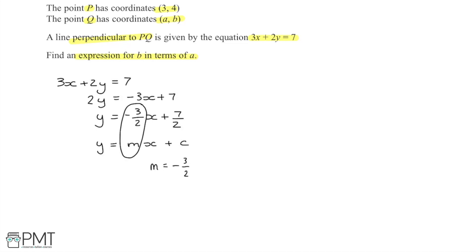Now if this line is perpendicular to PQ, the gradient of PQ is going to be the negative reciprocal of this gradient, because the gradients of two perpendicular lines multiply together to make minus 1. So taking the negative reciprocal — minus 1 divided by minus 3 over 2 — that gives me a gradient for PQ of 2 thirds.